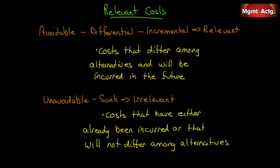So let's get to it. When we make decisions, we have to think about what this alternative is going to cost versus that alternative. To assess the value of the alternatives, what we're really looking for is the difference in cost between the two — we just want to include costs that are relevant to the decision. There are a bunch of different names for relevant costs: avoidable costs, differential costs, incremental costs. They all mean the same thing. These are costs that differ among alternatives and will be incurred in the future.